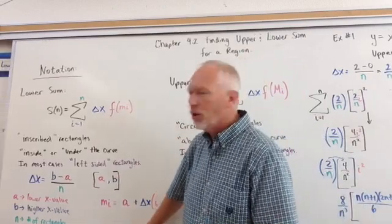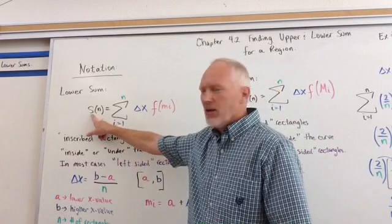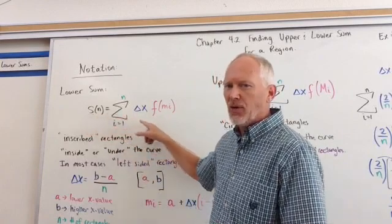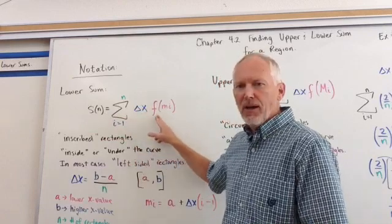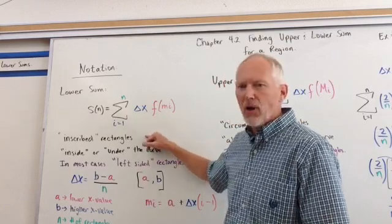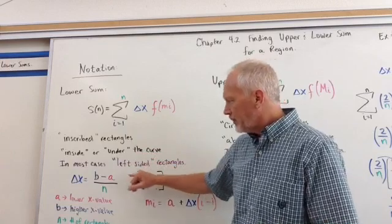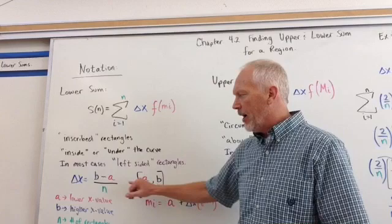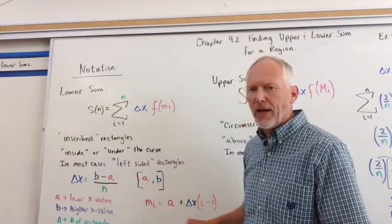In my previous video, I did something about finding the lower sum, and the lower sum was small s or lowercase s of n is equal to the sum from i to n, the change in x times the function of lowercase m sub i. These are inscribed triangles, typically. They're inside or under the curve, and in most cases, these are left-sided rectangles where the change in x is b minus a over n on an interval a to b.